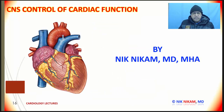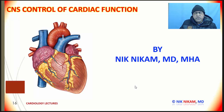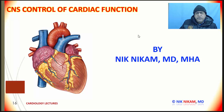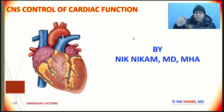Ladies and gentlemen, this is a brief overview of the central nervous system control of cardiac function on a minute-to-minute basis. Signals are sent from various parts of the body, including the aortic arch and the carotid bodies, and the central nervous system is able to recognize changes in blood pressure, changes in pH, changes in oxygen saturation, and changes in carbon dioxide, and respond appropriately to restore homeostasis. Thank you so much for watching. I am Dr. Nick Nickham, and please do subscribe to our YouTube channel. We will see you next time.